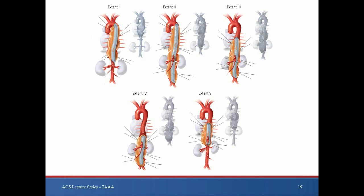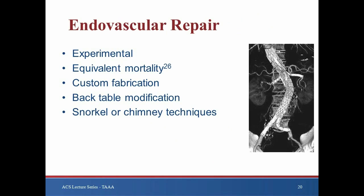Variations exist depending on the extent of the aneurysm. Extent 1 aneurysms can usually be repaired with a beveled anastomosis to the abdominal aorta just above the visceral segment. Extent 5 aneurysms can be repaired in the same fashion with a beveled anastomosis including the bilateral renal arteries. This slide depicts representations of open repair techniques of extent 1 through 5 TAAAs.